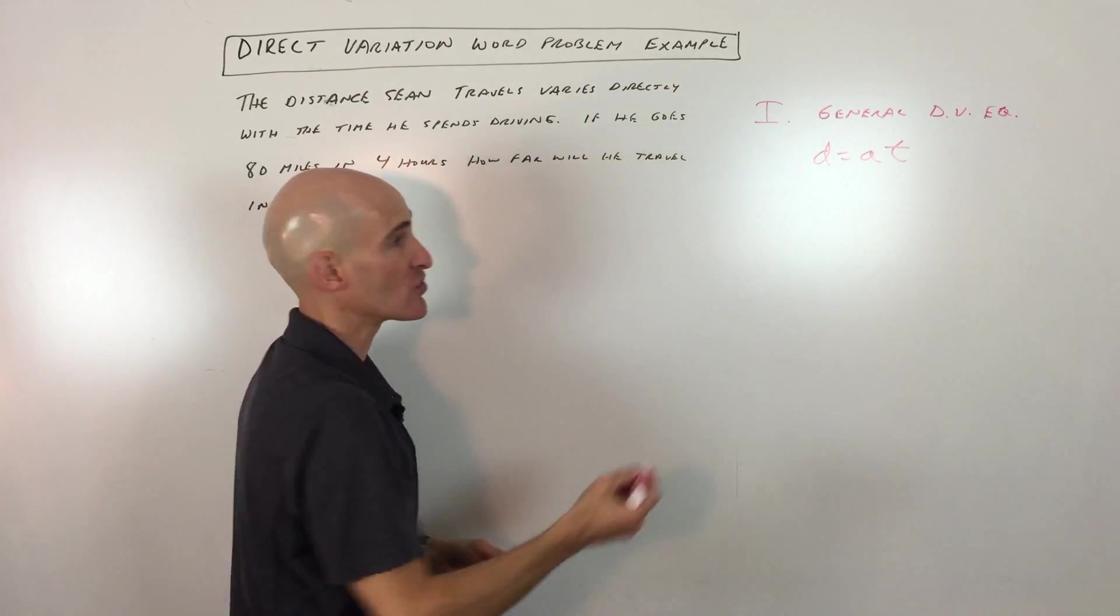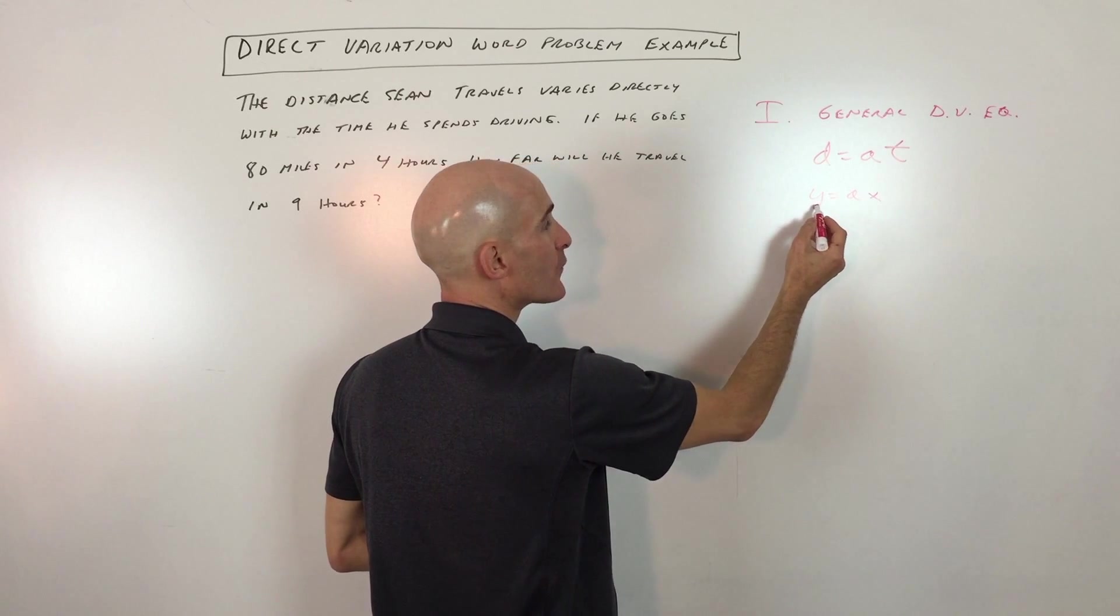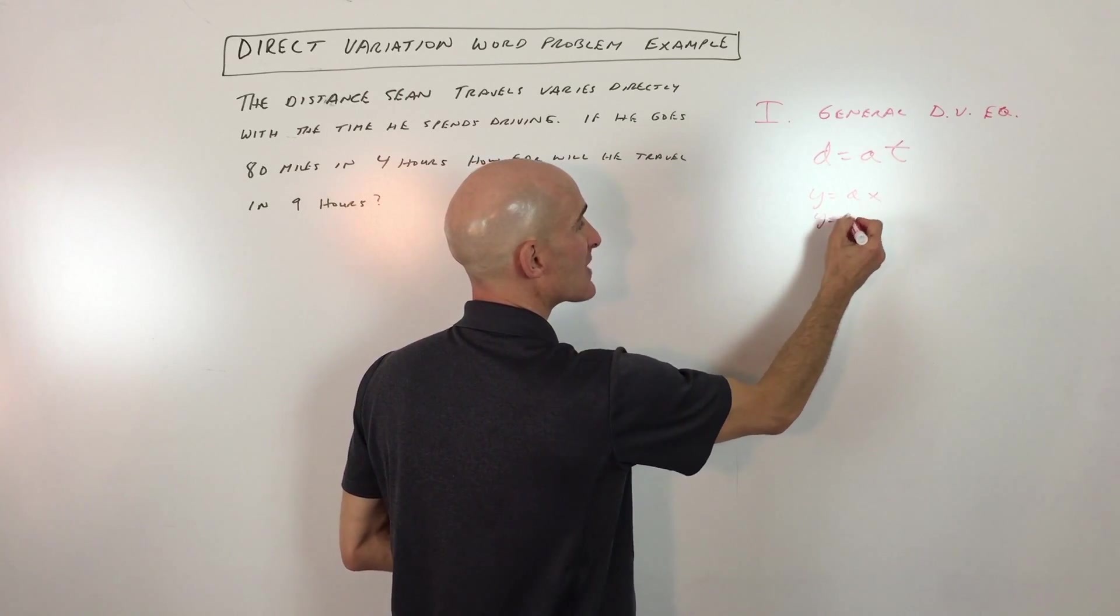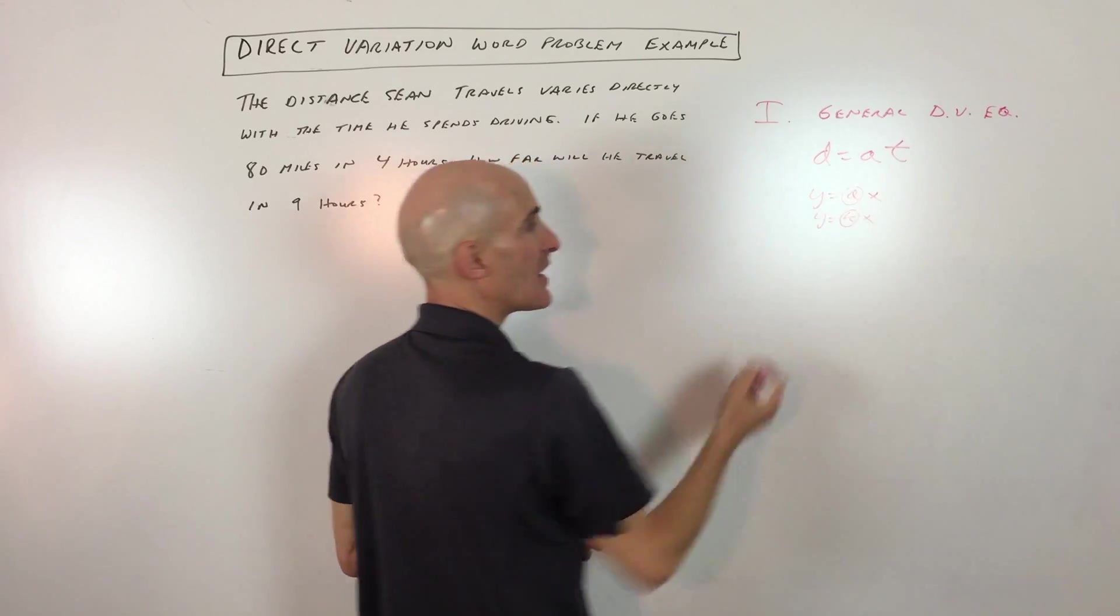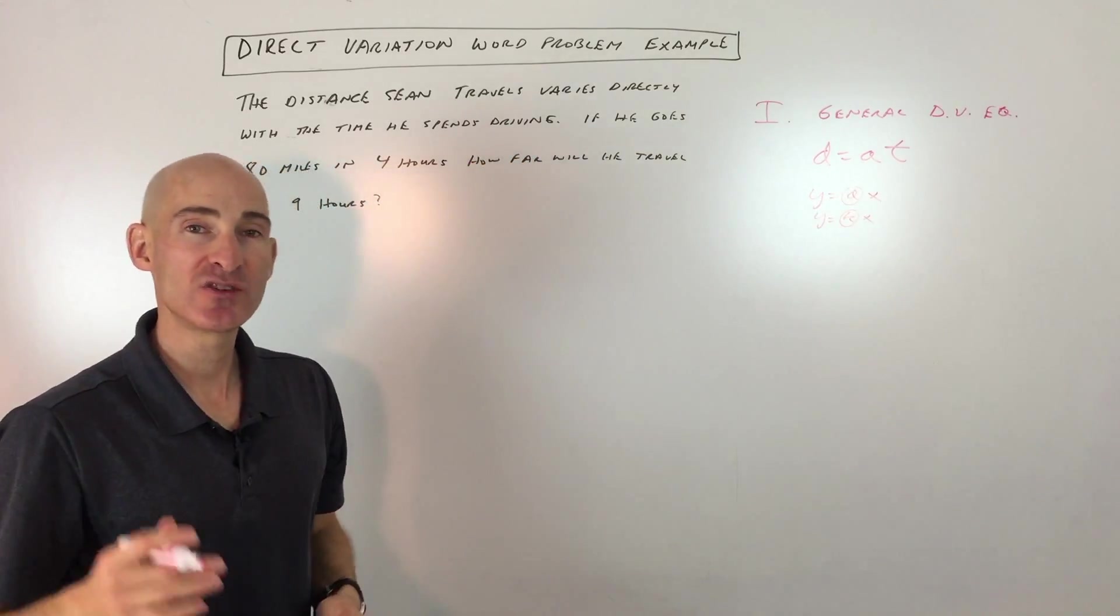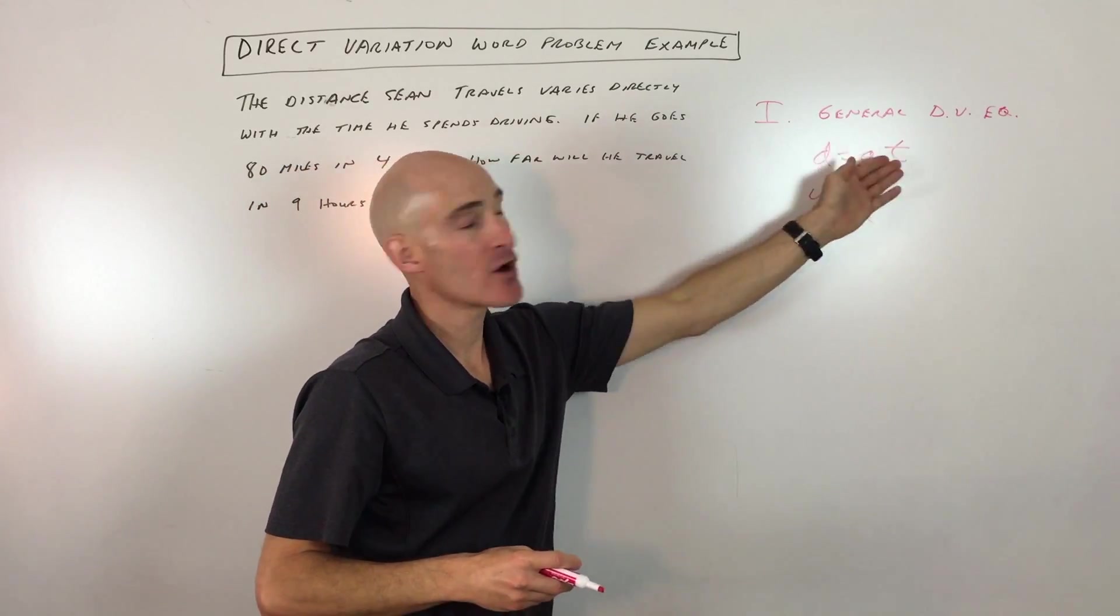Now the a is your constant of variation. Remember when we work with direct variation equations, we're working with equations in the form y equals a times x, or sometimes books use the letter k, y equals k times x. But the a or the k is the constant of variation. You can think of it as like the slope, and it's what relates the two variables to one another.